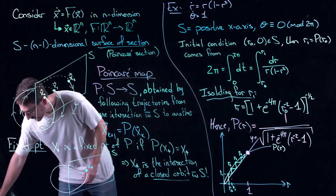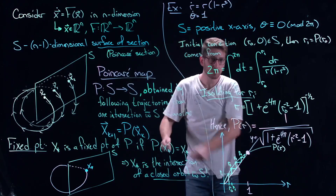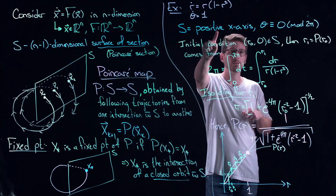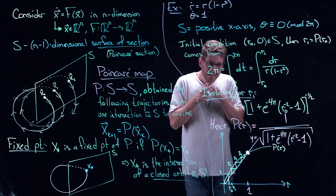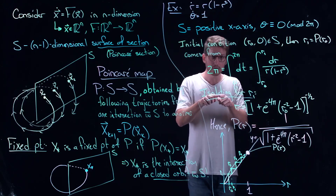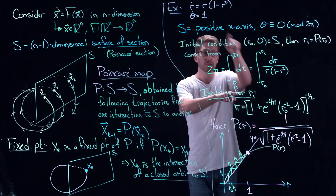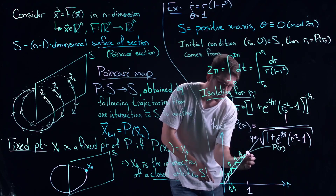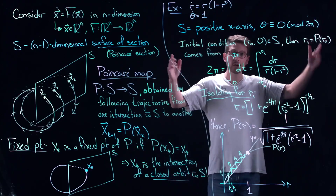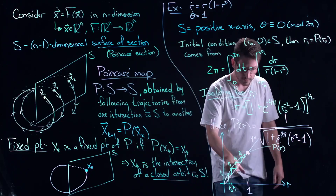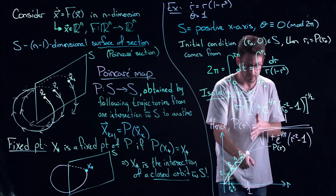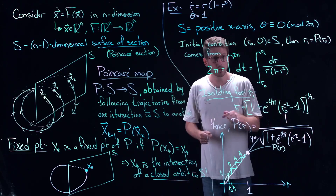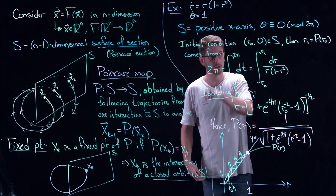What does that mean in the context of the original dynamical system? I am flowing around in a circle via the uniform oscillator, and every time I hit the Poincaré section — the positive x-axis — I get a little bit closer to the limit cycle. If I started near the origin, I go around and I'm a little bit closer to 1, then closer again, narrowing the gap. You can do the same thing starting outside — you come in and get closer to 1.